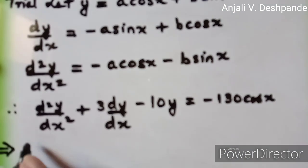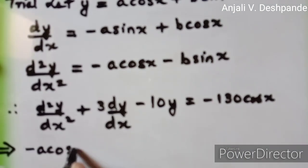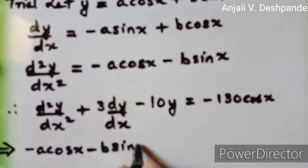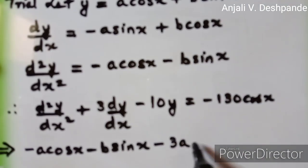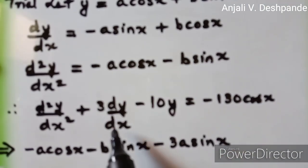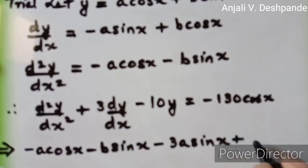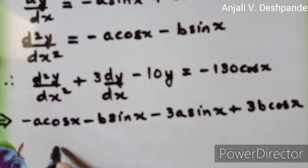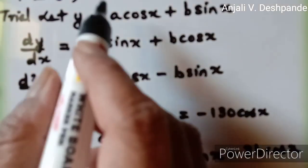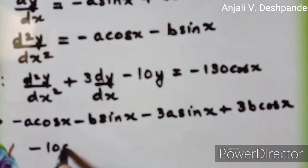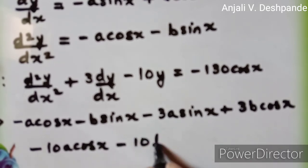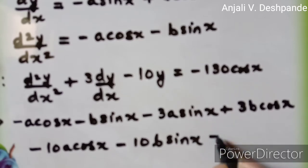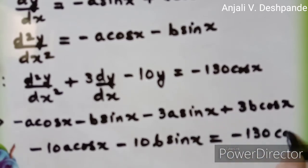We substitute: minus a cos x minus b sin x, then plus 3 times giving minus 3a sin x plus 3b cos x, minus 10y. So minus 10a cos x minus 10b sin x is equal to minus 130 cos x.